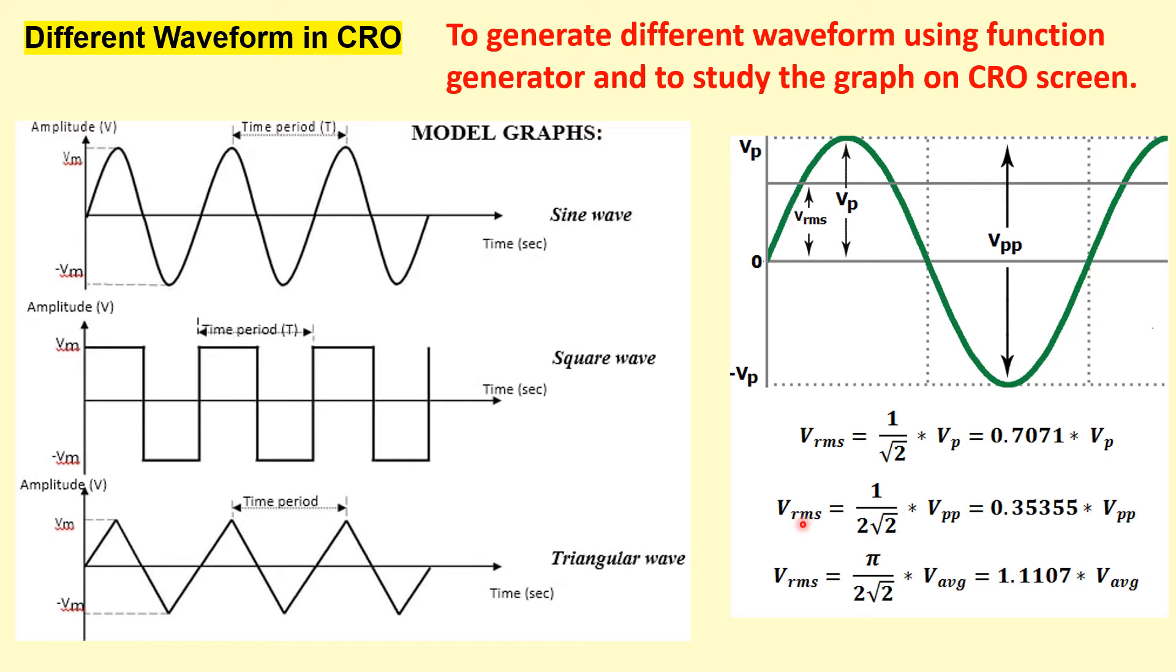And VRMS can be also related to Vpeak to peak because we can write in place of Vp, we can write Vpp by 2. So it will be 1 by 2 root 2 of Vpp. And also we can find out the average value of voltage using this RMS value. There is a relation VRMS equal to pi by 2 under root 2 into Vaverage. So this is how we can get information from the graphs on the CRO.